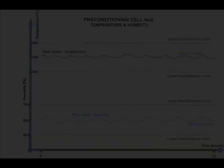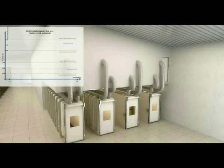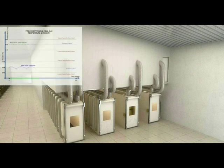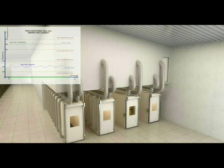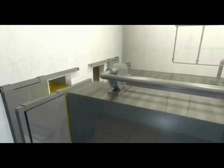Preconditioning cell number 2 functions much the same way as cell number 1 with circulated air atmosphere, but conditioned with both temperature and humidity. After the 12-hour preconditioning cell number 2 stage is complete, product will be at 45 degrees Celsius plus or minus 5 degrees Celsius temperature and 60% plus or minus 15% humidity.